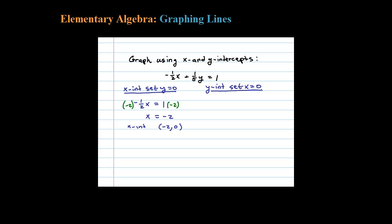All y-intercepts have that property where the x value is 0. In this case, negative one-half times 0 will leave me with 0, so the equation I need to solve is one-fifth y equals 1. The reciprocal of one-fifth is 5. Multiplying both sides by 5, I'll have y equals 5.